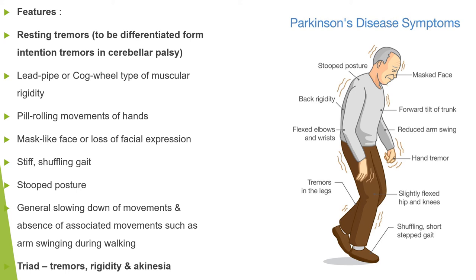The face has no expression, hence it is called a mask-like face or loss of facial expression. The patient has a stiff shuffling gait, walking very slowly at first, then increasing in speed and potentially colliding with objects. There is stooped posture — a bent trunk posture. There is general slowing down of movements and absence of associated movements such as arm swinging during walking. The triad seen in a Parkinson's patient is tremors, rigidity, and akinesia.